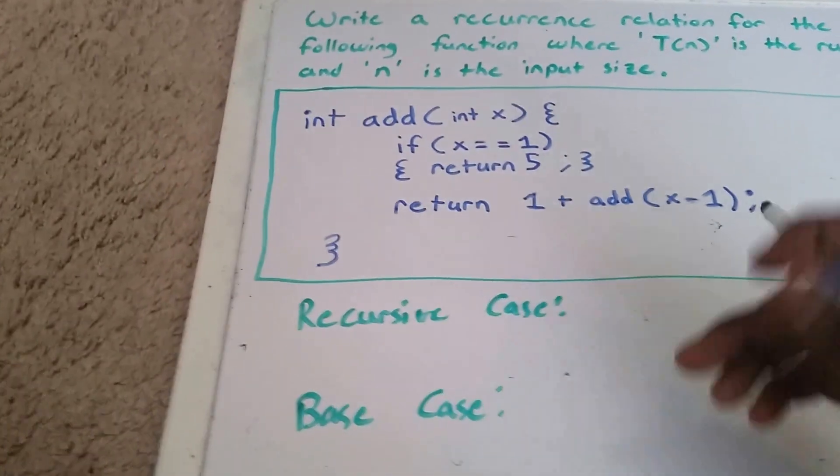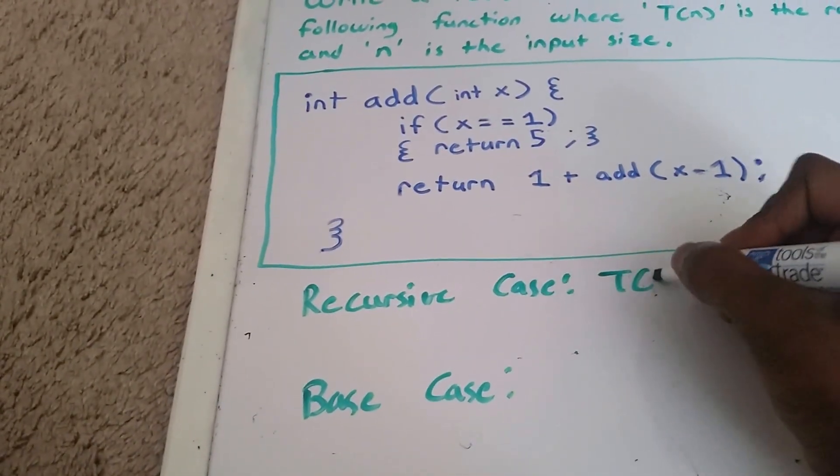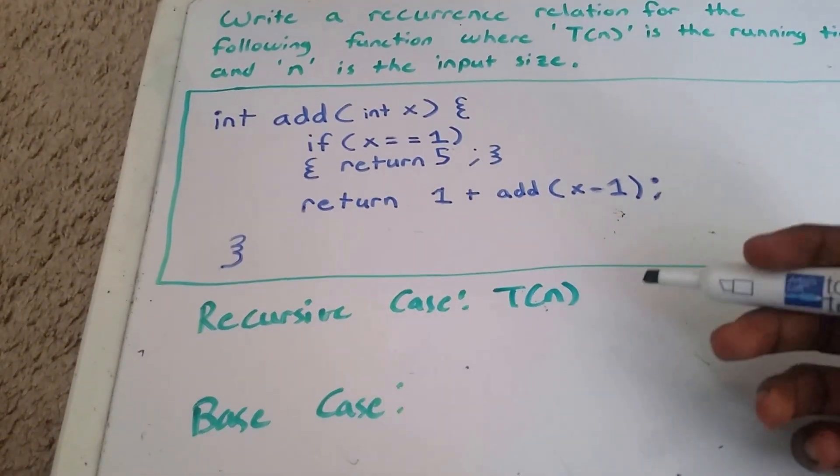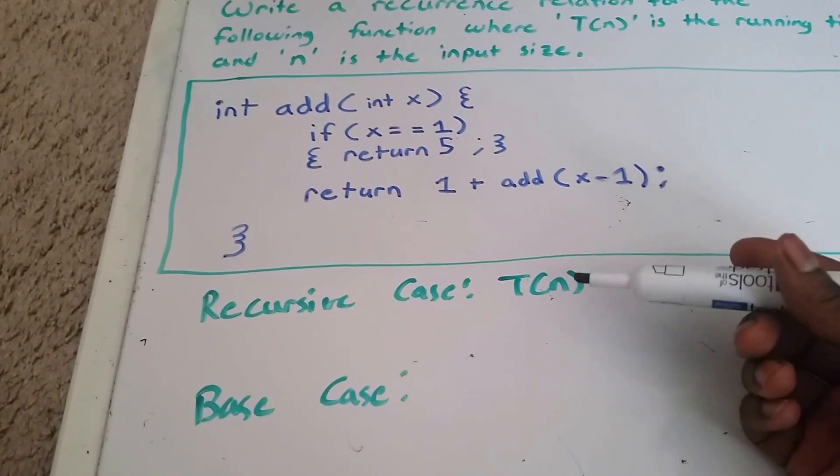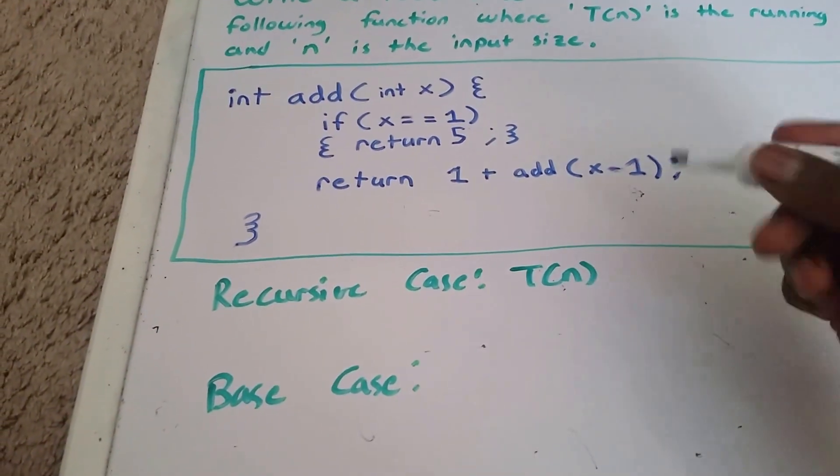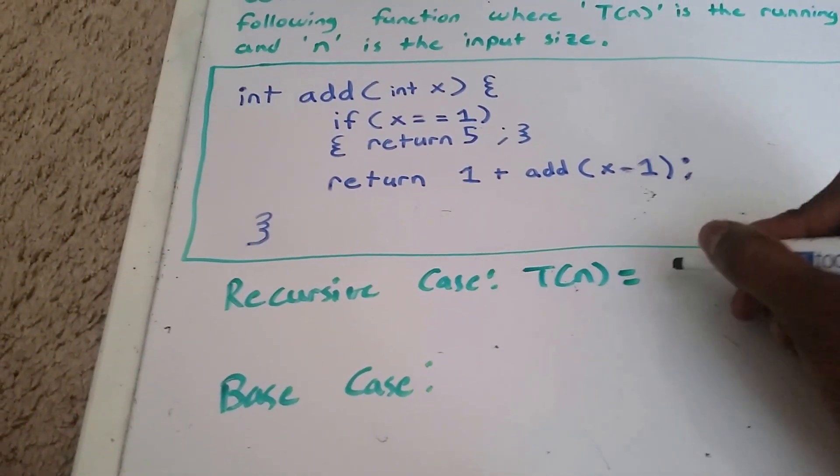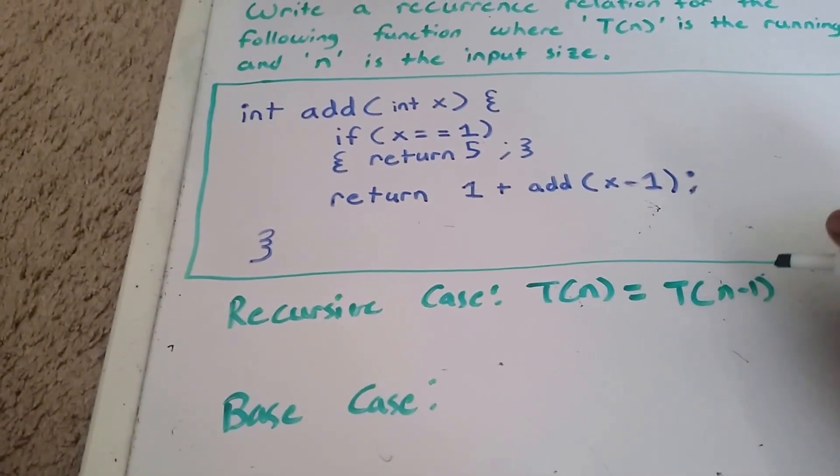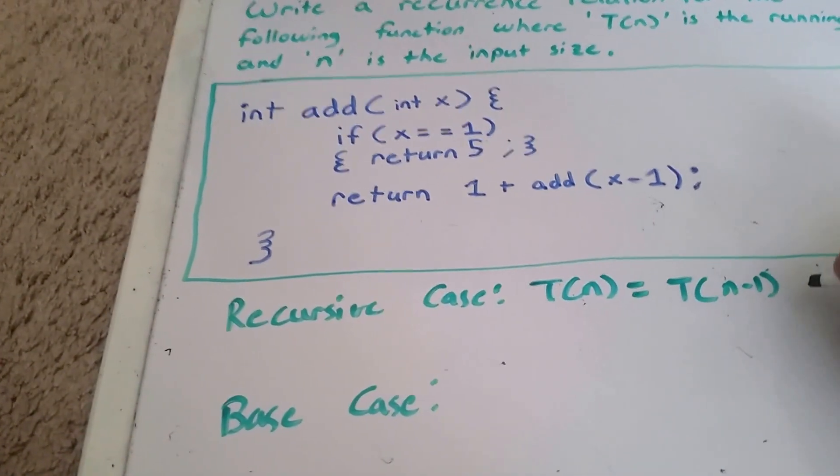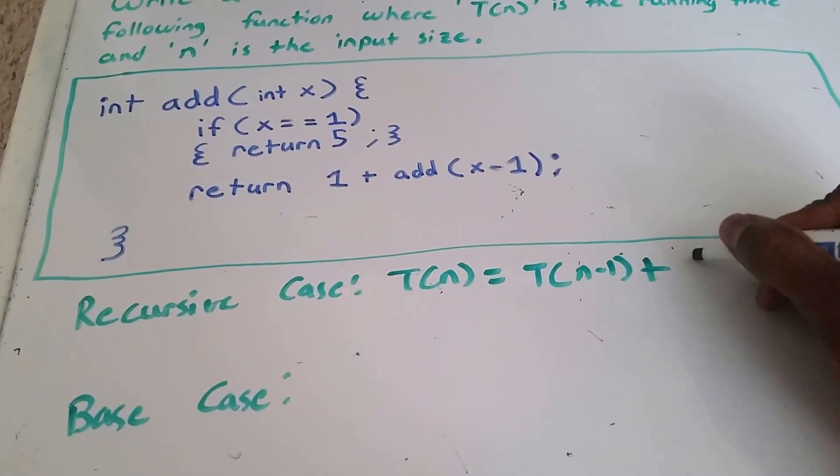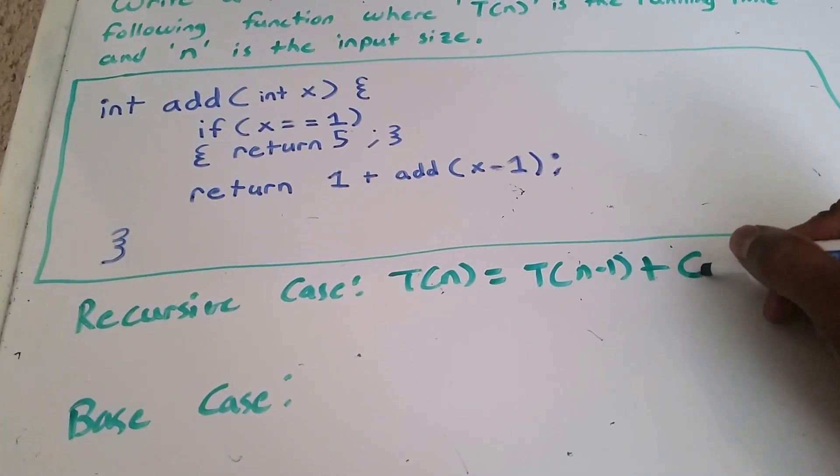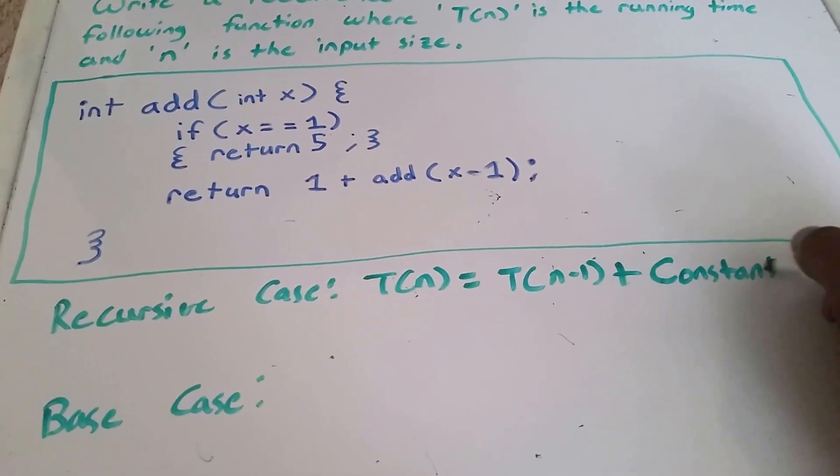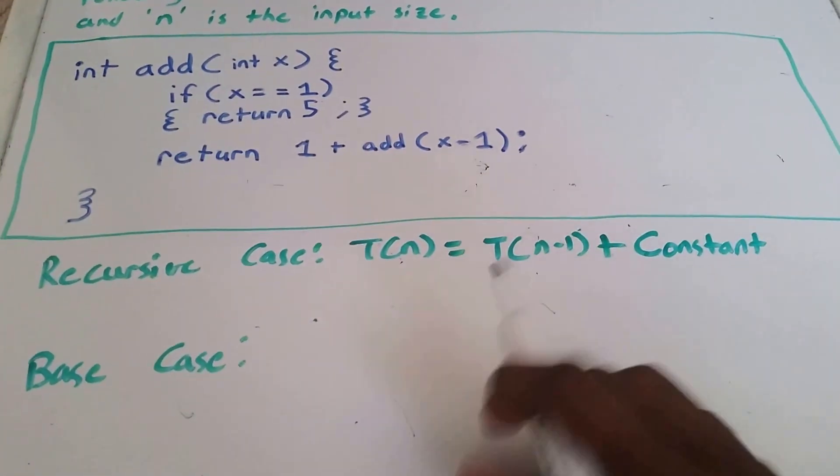Okay, so the recursive case, that's T(n). So that's the running time it takes for some input size n. This is going to be equal to T(n minus 1) plus some constant.